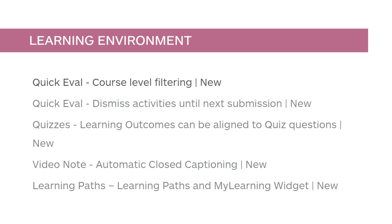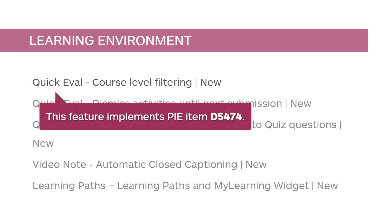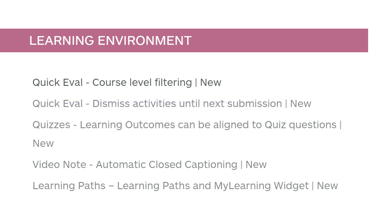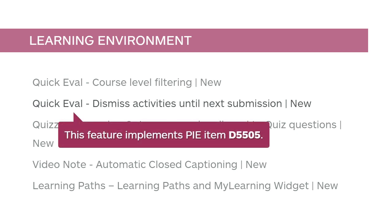When instructors open Quick Eval at the course level, only activities relating to that course will display. This feature implements PI item D5474. Activities can be dismissed in Quick Eval until another submission is made by a learner. This feature implements PI item D5505.